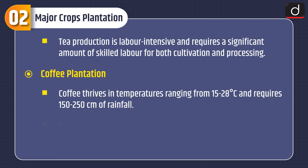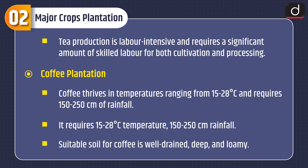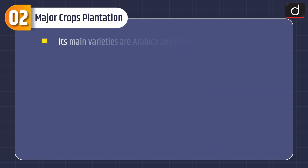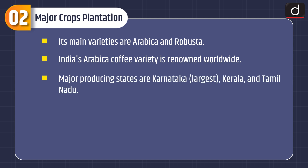Coffee Plantation: Coffee thrives in temperatures ranging from 15 to 28 degrees Celsius and requires 150 to 250 cm of rainfall. Suitable soil for coffee is well-drained, deep and loamy. Its main varieties are Arabica and Robusta — India's Arabica coffee variety is renowned worldwide. Major producing states are Karnataka (largest), Kerala and Tamil Nadu.